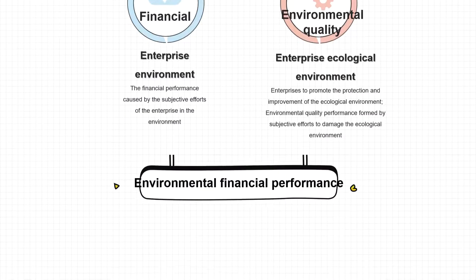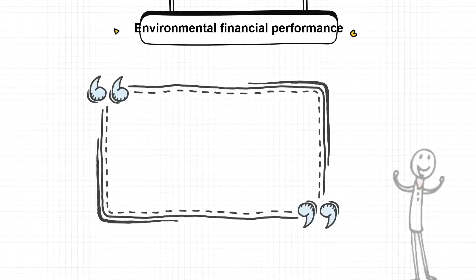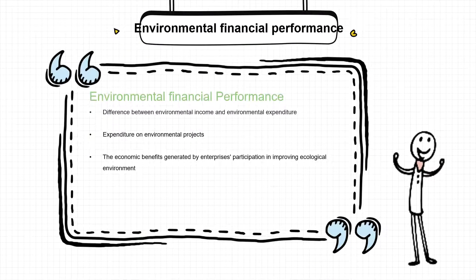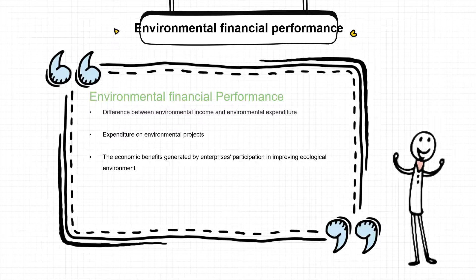The second aspect is the financial performance of the environment — the difference between environmental revenue and expenditure, the expenditure of environmental projects, and the economic benefits of enterprises participating in improving the ecological environment, all of which will affect the financial performance of enterprises.